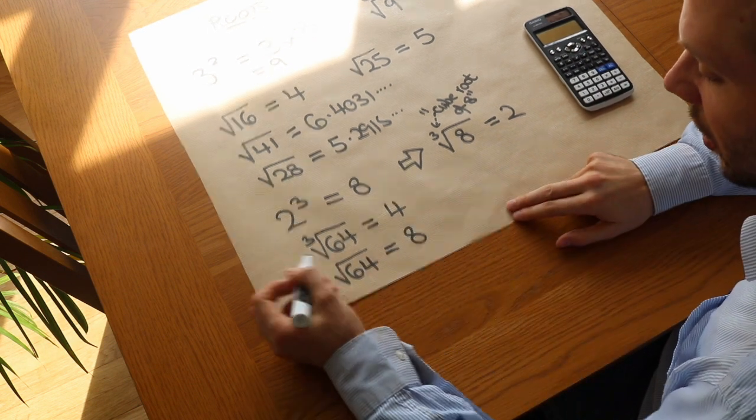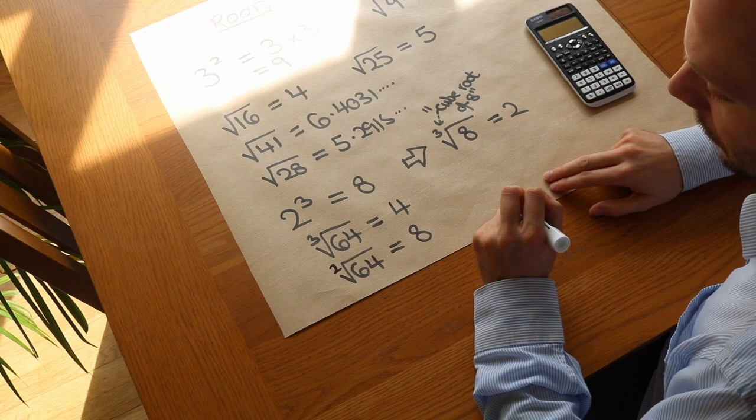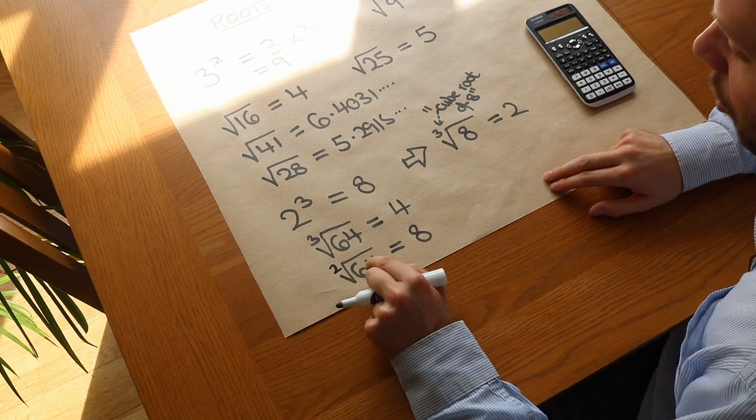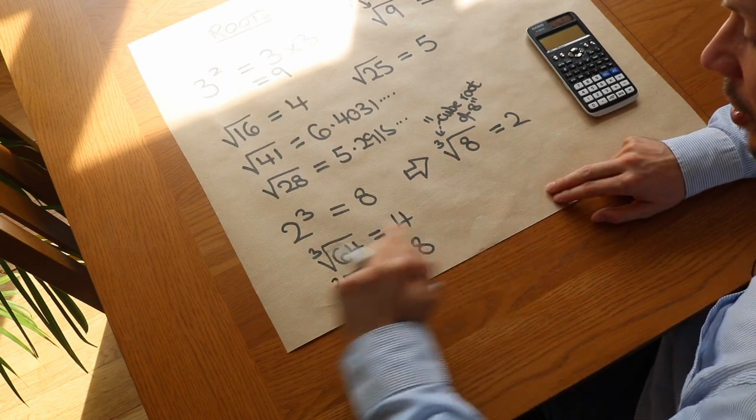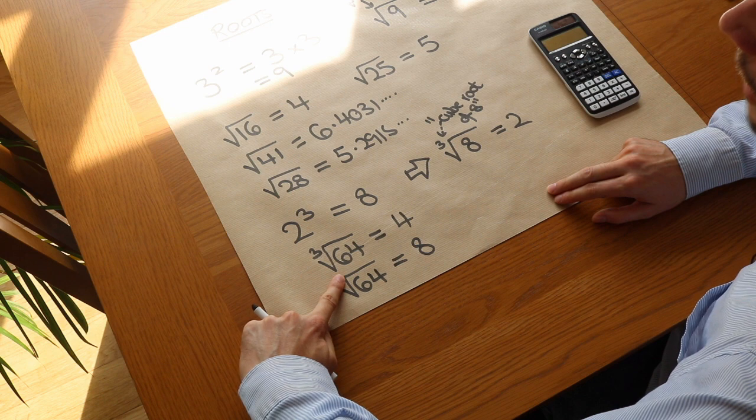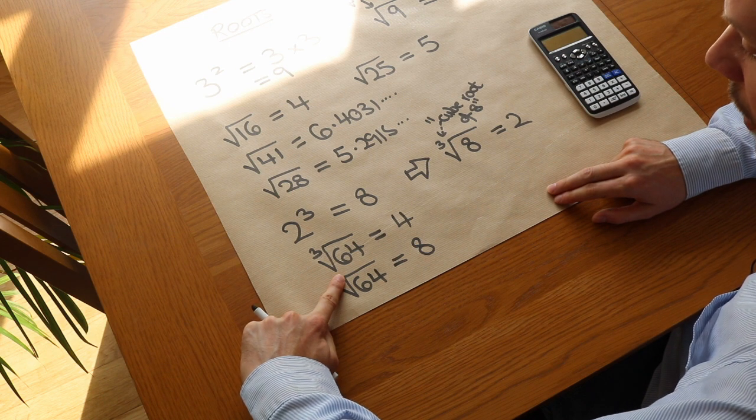You might wonder, why don't we put the 2 there? It's just because it's very common when you have a root that it's the square root. Because of that, if we don't put any number there at all, it by default means the square root.